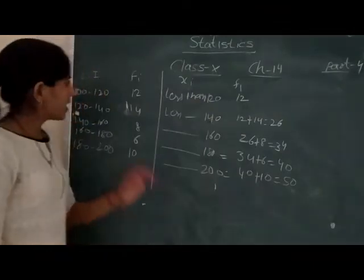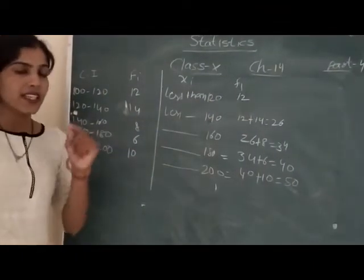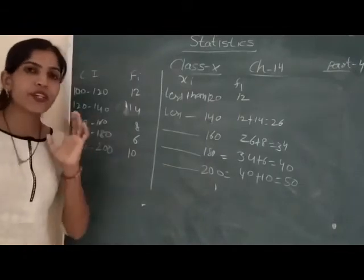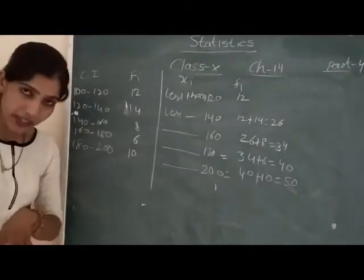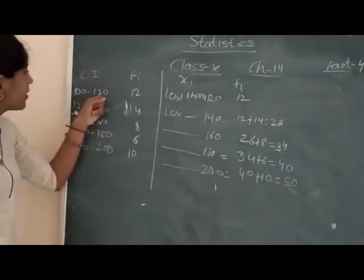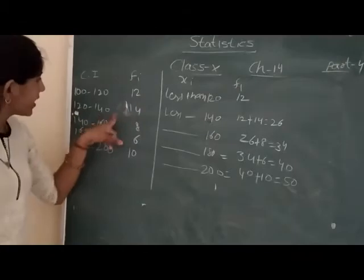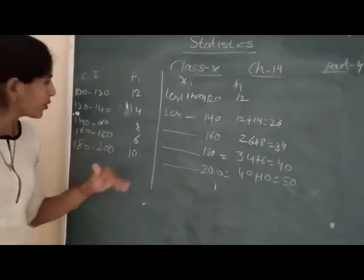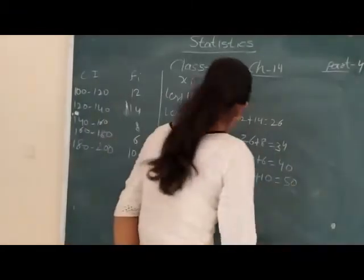Okay? When you have class interval frequency given, and you need to make frequency distribution curve, then you convert it to less than or more than. When you do less than 140, you take the total number. So you total them going forward. Now make the curve.